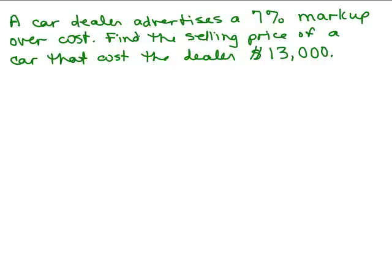This is like a percent increase problem. And when you markup something, it's a percentage of what the original cost was. So the original cost in this case is our $13,000. And we're marking it up 7%. So the first step is to figure out what 7% of $13,000 is.